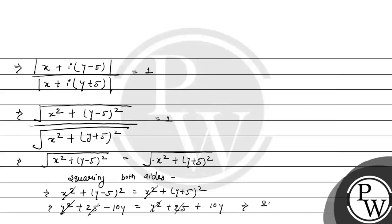After simplification, we get 20y equals 0, which gives us y equals 0.